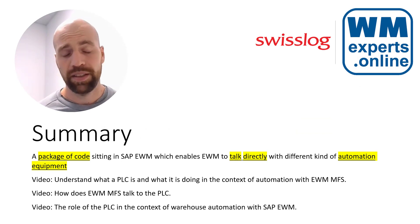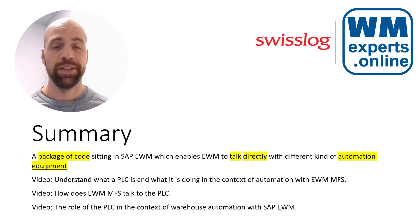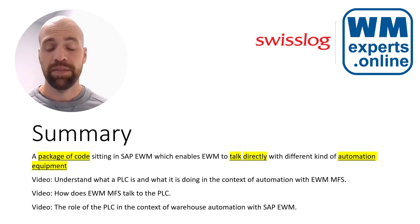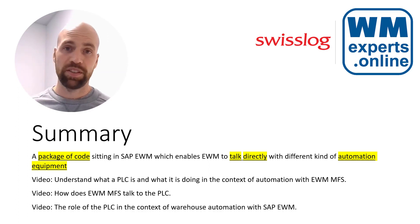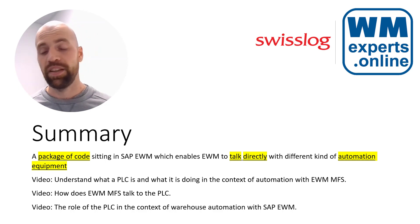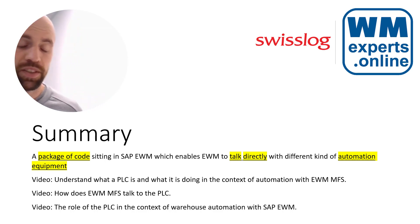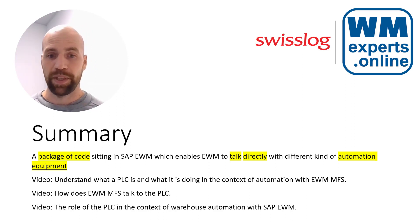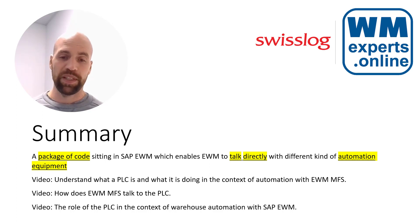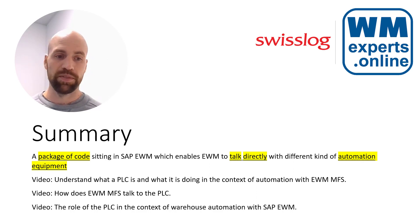To sum it up: we have a package of code in EWM, and this package enables EWM to talk directly via telegrams with the PLC, which in turn controls the automation equipment. The other way around, the PLC sends messages to EWM, and the EWM MFS component is able to understand and process those telegrams and trigger follow-up actions within EWM. This is all based on the package of code introduced as part of EWM standard, called the MFS module or MFS component.